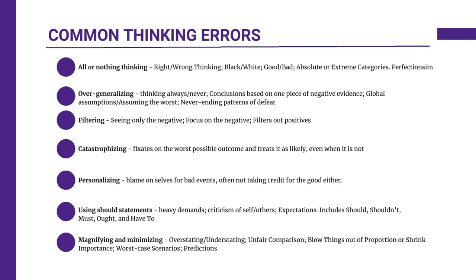Overgeneralizing occurs when a single negative event is seen as a never-ending pattern of defeat. The example is believing that just because one job interview went poorly, you'll fail at every future interview. Counter overgeneralization by examining evidence to the contrary and recognizing that isolated incidents do not define overall capabilities or outcomes. Filtering involves focusing solely on negative aspects of a situation while ignoring any of the positive elements — for example, dwelling on a single criticism despite receiving numerous compliments on a project. Develop awareness of both positive and negative aspects, fostering a more balanced and accurate perception of events.